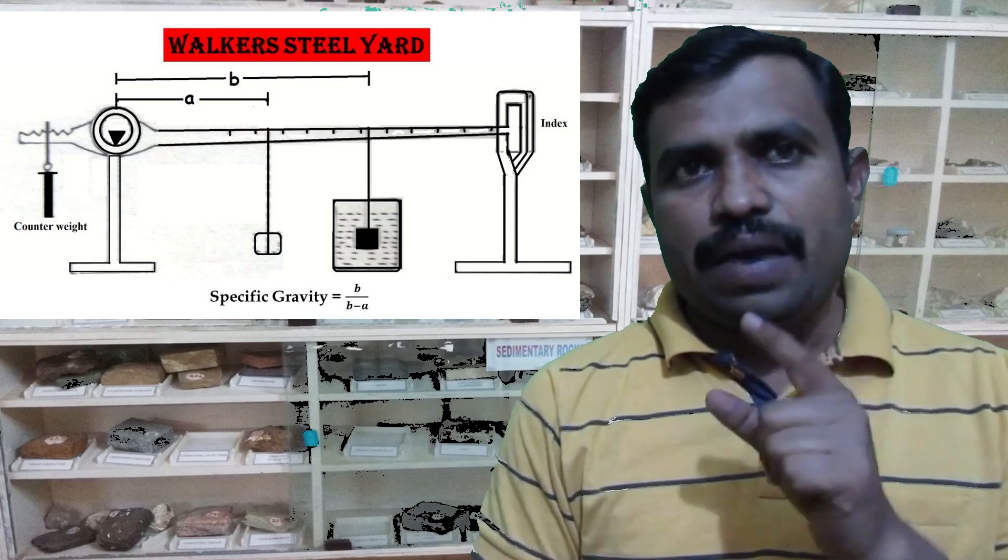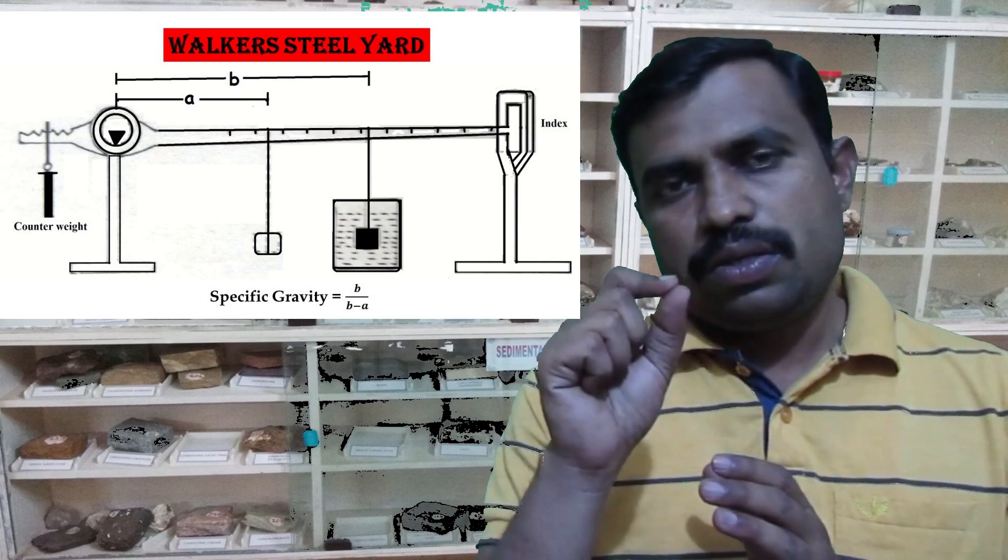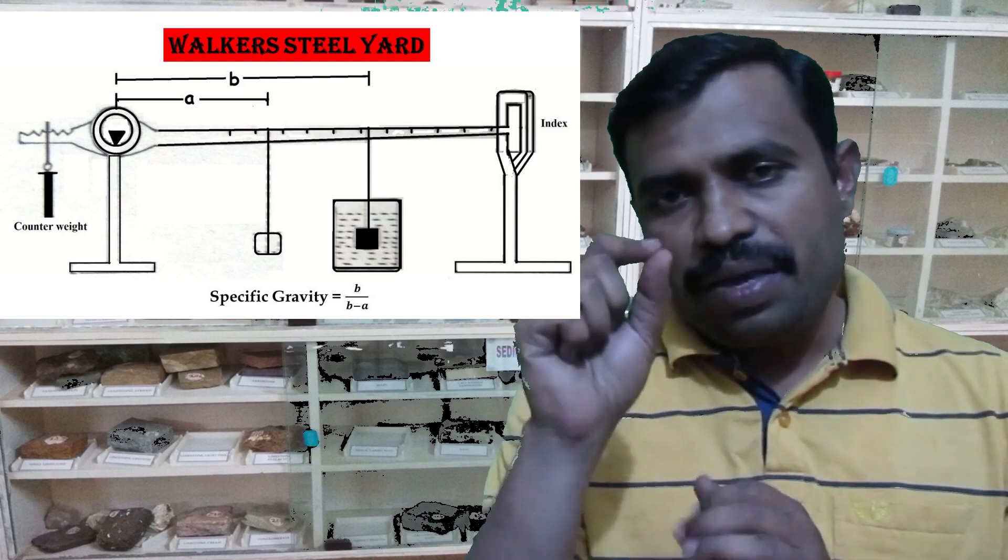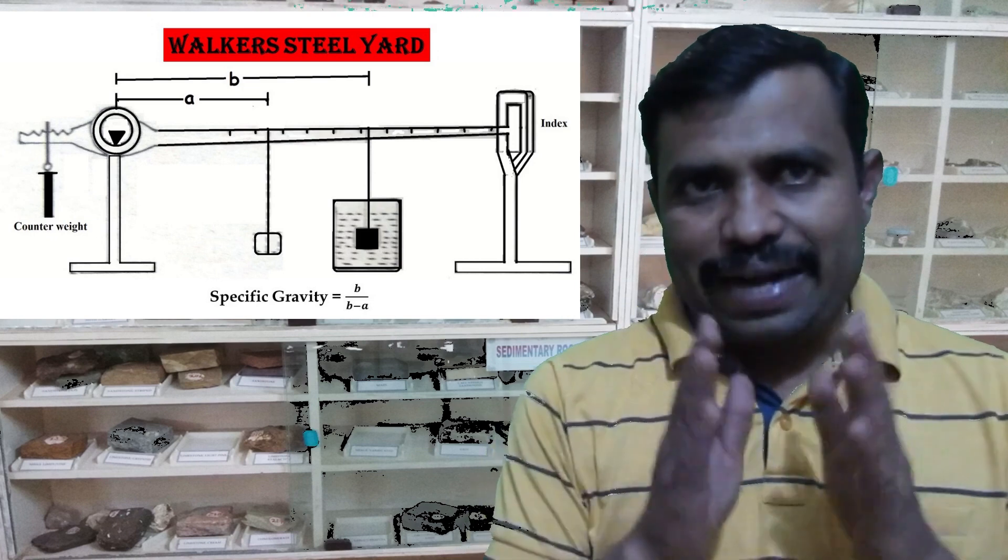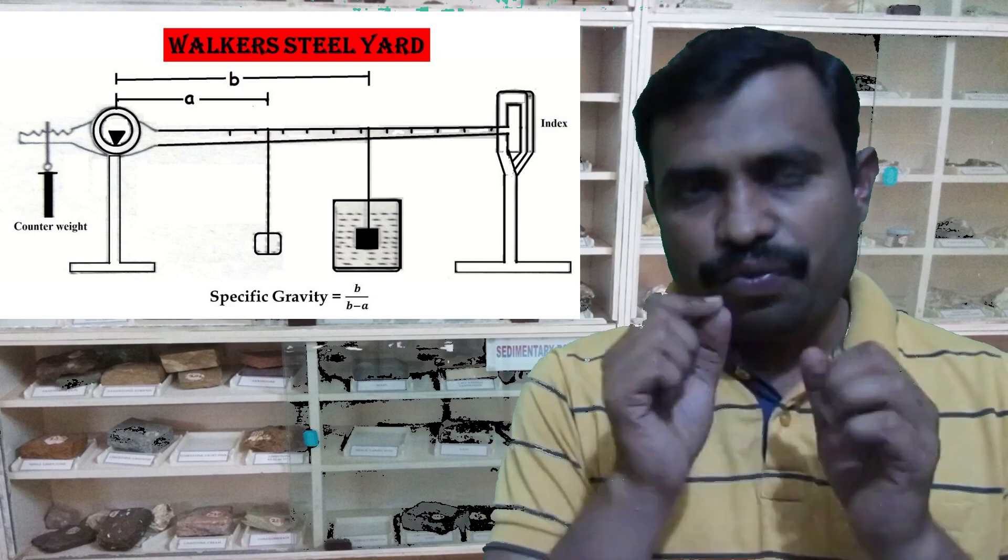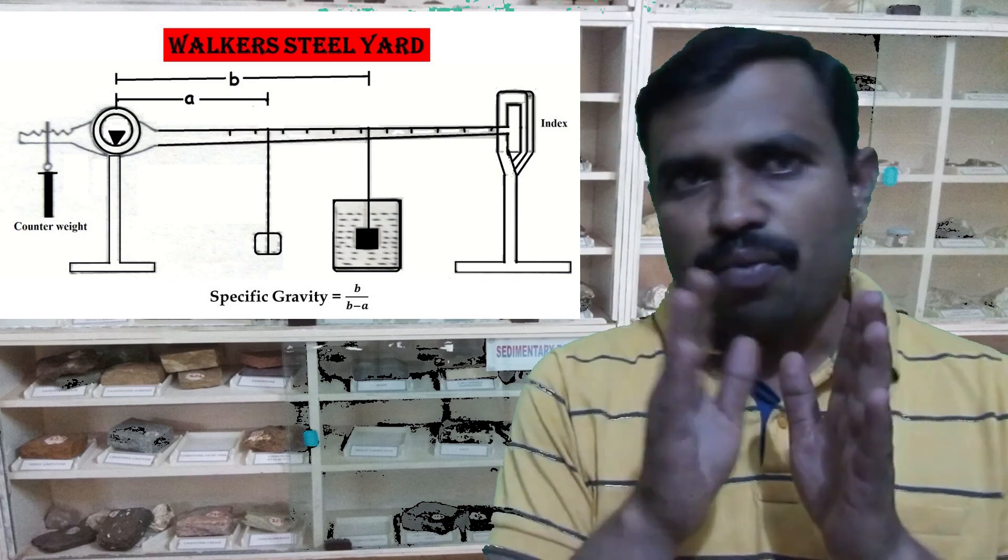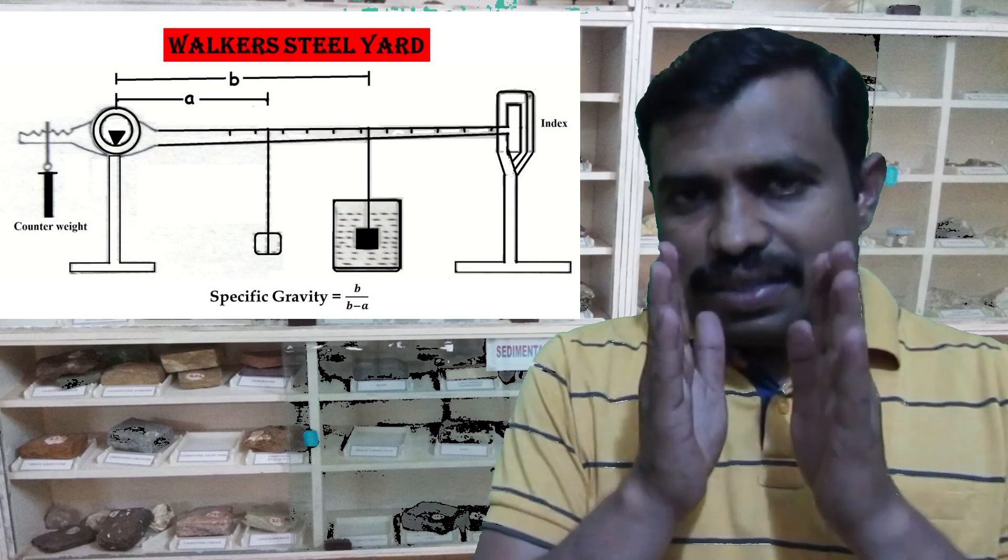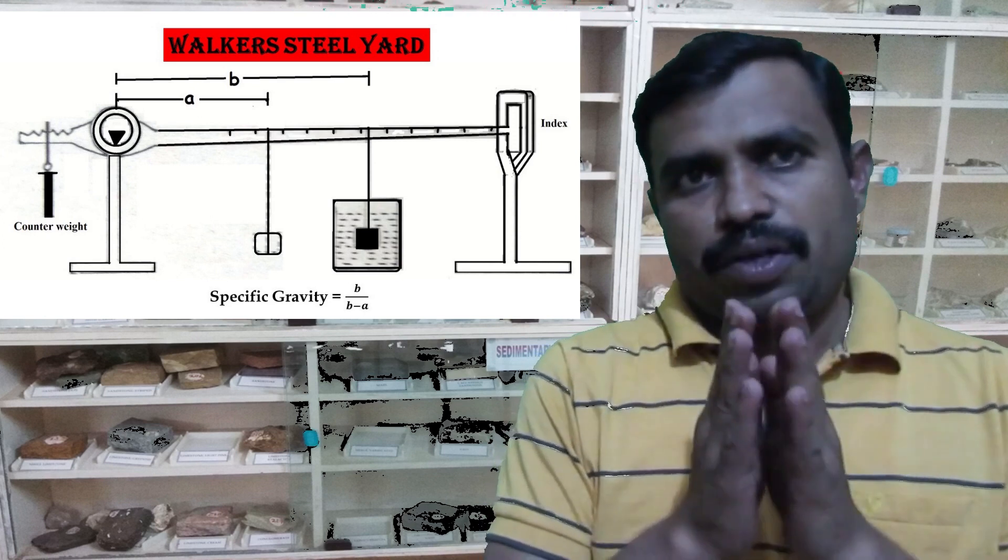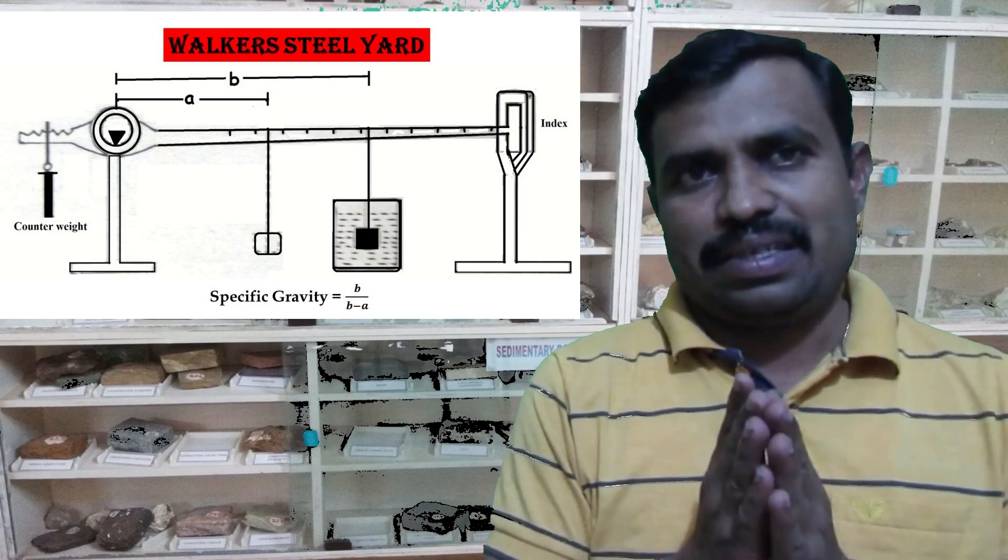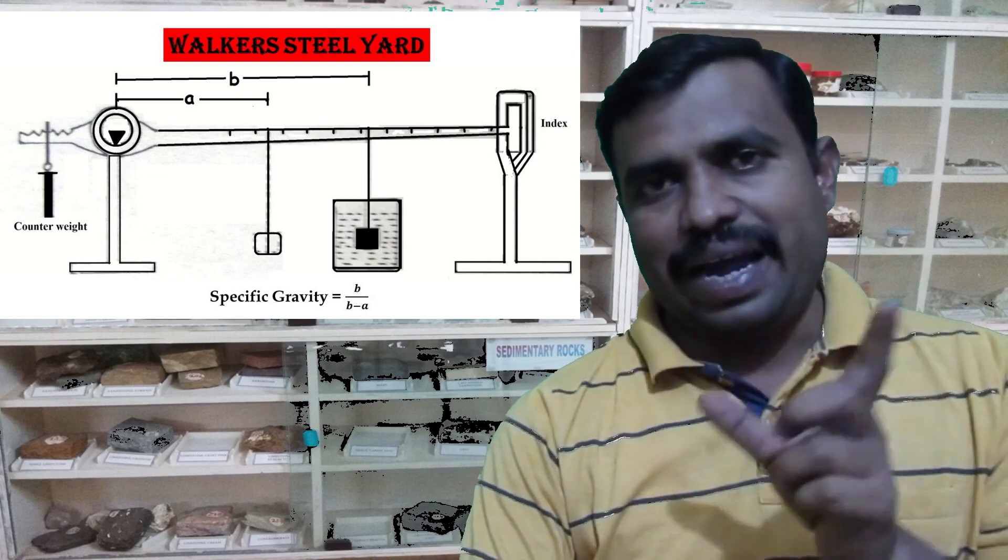The specific gravity of the mineral is calculated as follows: specific gravity is equal to B divided by B minus A. It may be noted that there is a counter weight on the shorter arm. This weight can be shifted from one notch to another, but it must remain in the same notch during any one experiment. This is regarding the Volker's steelyard.